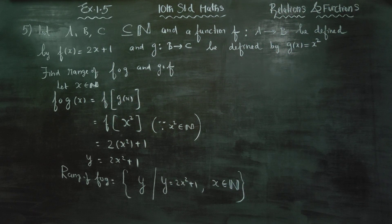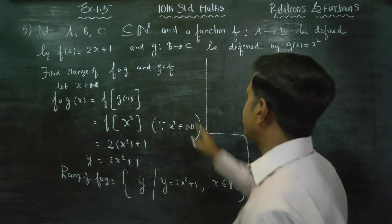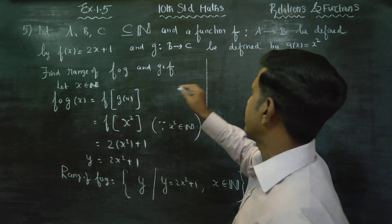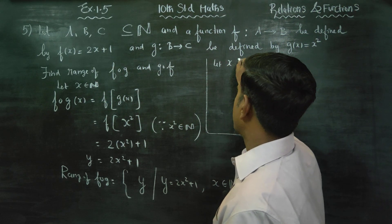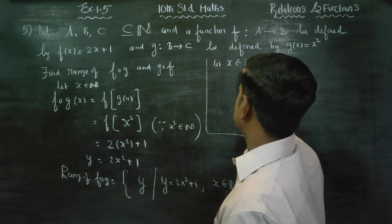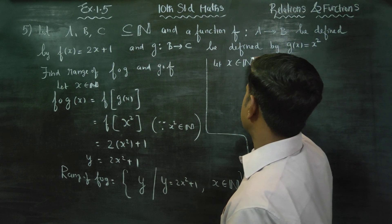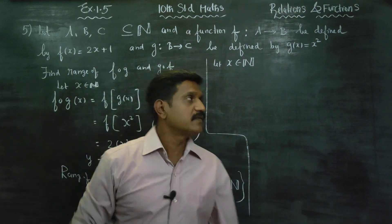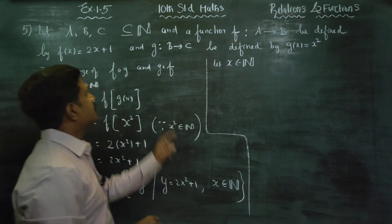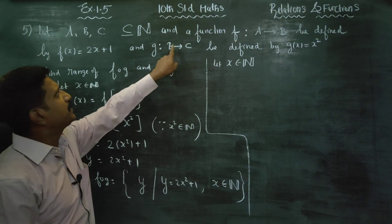The second part is G dot F. We are asked to find G dot F. Again, I am going to start. Let x belong to natural numbers. G dot F of x means we first apply F, then apply G to F(x).